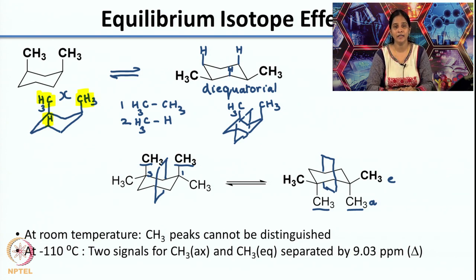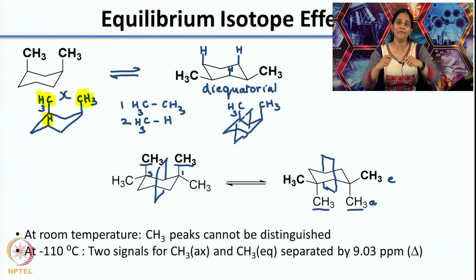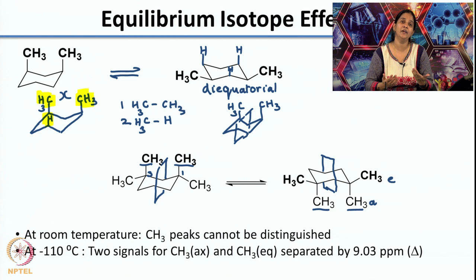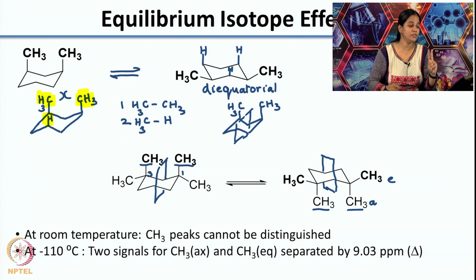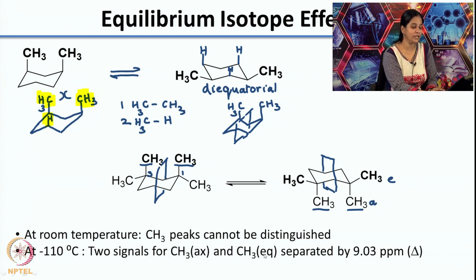At −110°C, two signals are seen: one corresponding to the axial and one to the equatorial CH3. These two signals are separated by 9.03 ppm.